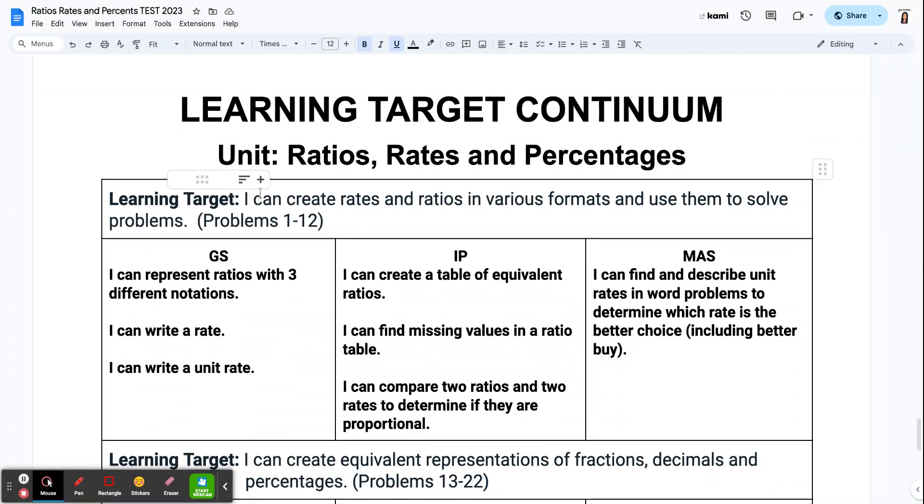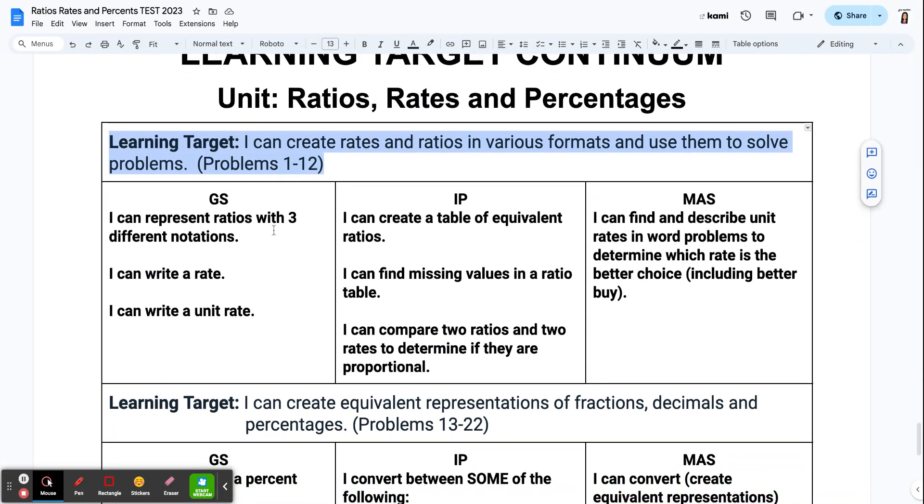The very last page of this test is just your learning target continuum. So this is just your overall section, like your basic learning target, is your rates and ratios. All of the things involved in rates and ratios. And you're getting started in progress and mastery is kind of like just tiering those different skills. Can you just basically write a rate or a unit rate? Do you know the three different ways to write a ratio? The in progress is more your ratio tables. Finding missing values in a ratio table. Comparing two ratios to determine if they're proportional or not. And then your mastery is being able to find and describe unit rates in word problems. And this includes your better buy choices, okay? So your better buy questions are here.